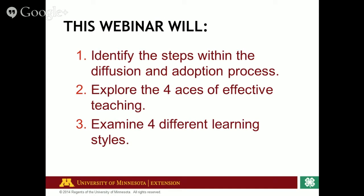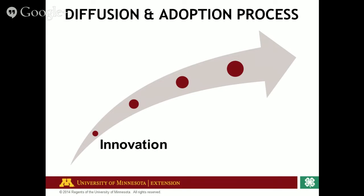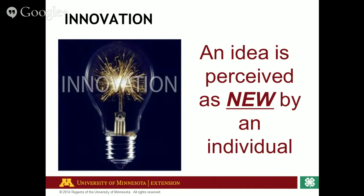Let's start by taking a step and looking at the diffusion and adoption process. The first step in the process is innovation. An innovation is an idea that's perceived as new by an individual. So if someone sees something that is new to them that interests them, they're likely going to want to seek out more information, and that gets us started down the diffusion and adoption process.